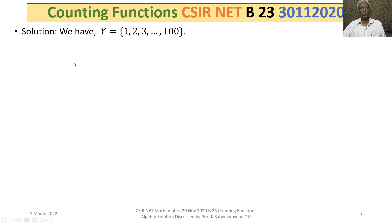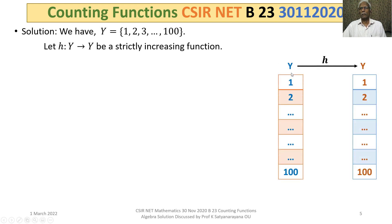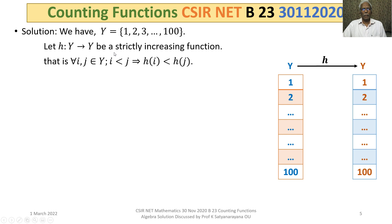Let us now discuss the solution in detail. We have Y, the set consisting of elements 1, 2, 3, up to 100. Let h: Y → Y be a strictly increasing function. By definition, a strictly increasing function means for all i, j belonging to Y, when i < j, we have h(i) < h(j).